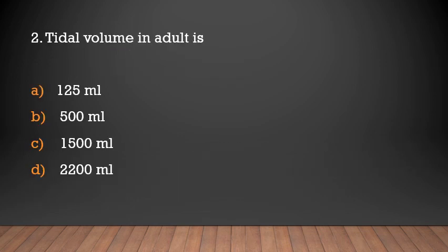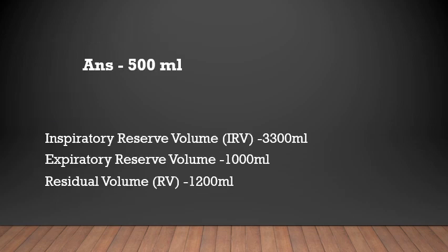Tidal volume in an adult is: 125 ml, 500 ml, 1500 ml, or 2200 ml? The answer is 500 ml. Tidal volume in an adult is 500 ml.